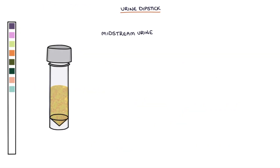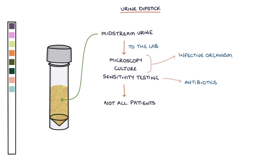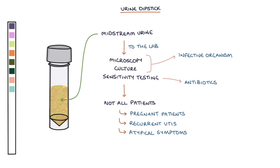A midstream urine, or MSU, sample can be sent to the lab for microscopy, culture and sensitivity testing, which will help determine the infective organism and the antibiotics that will be effective in treatment. Not all patients with an uncomplicated UTI require an MSU to be sent to the lab, but it is important in pregnant patients, patients with recurrent UTIs, patients with atypical symptoms, or when the symptoms do not improve with antibiotics.